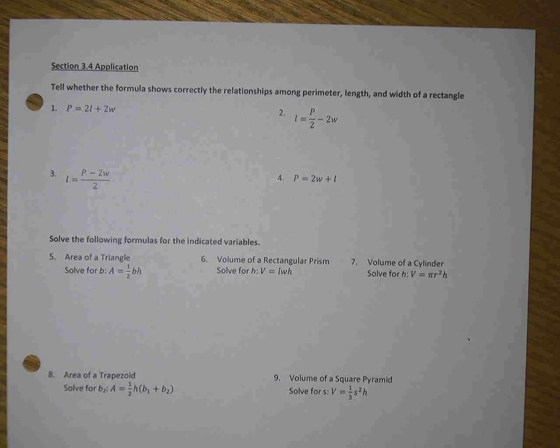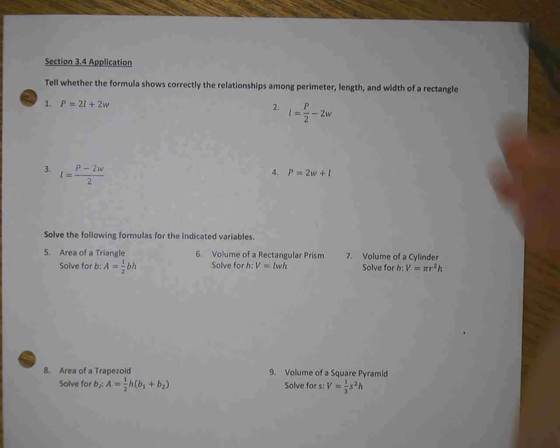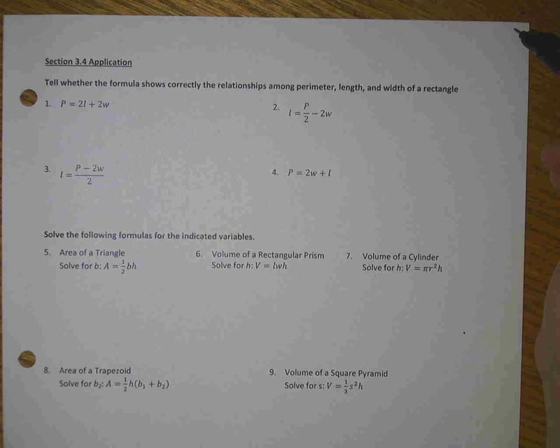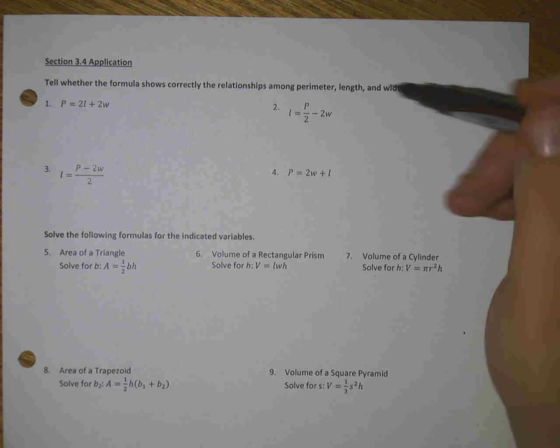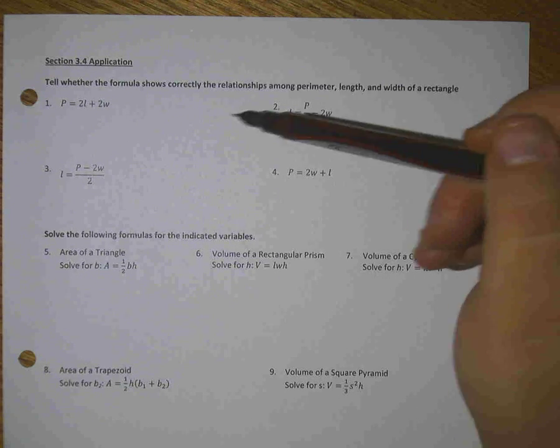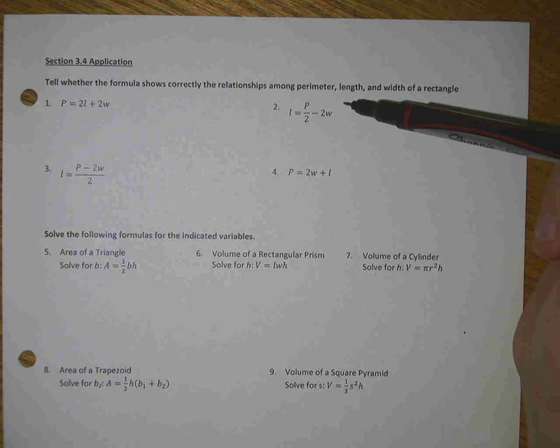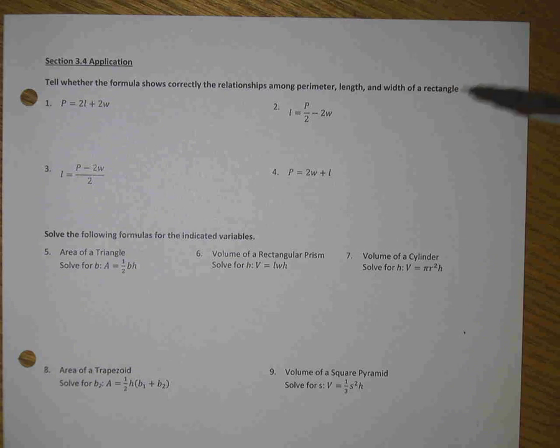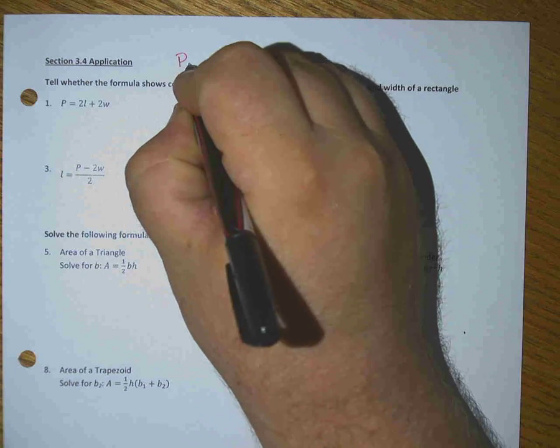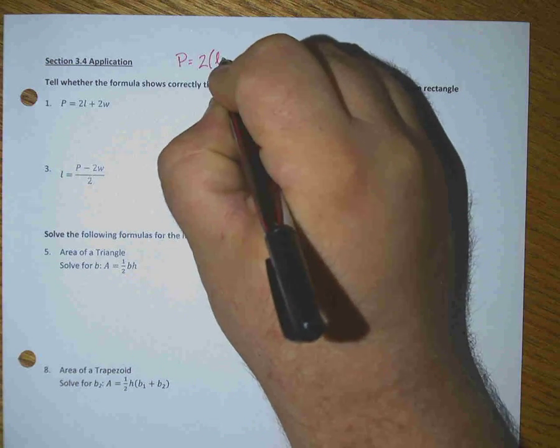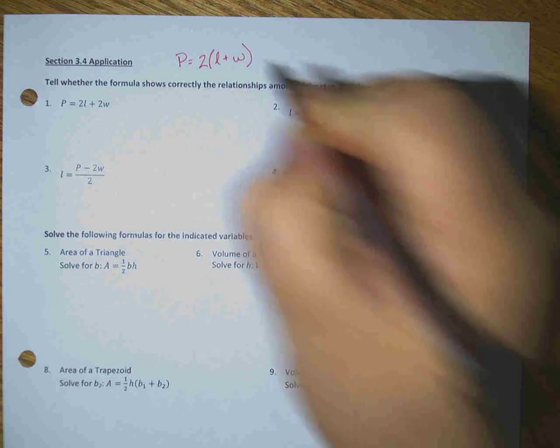Hello and welcome to the Section 3.4 Application walkthrough. In this section, we're dealing with literal equations and solving different formulas for different variables. The first section asks you to tell whether the formula correctly shows the relationships among perimeter, length, and width of a rectangle. The basic formula for perimeter of a rectangle is two times the length plus the width.